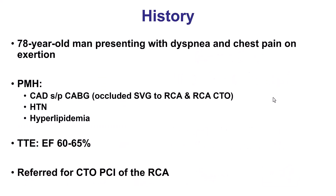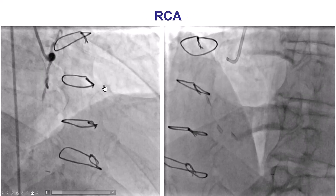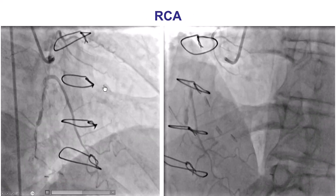The patient was an elderly gentleman with dyspnea and angina on exertion. He had previous coronary bypass, but the bypass graft to the right coronary artery was occluded and the native RCA was a CTO. He was sent for re-canalizing the CTO of the right coronary artery, which was considered to be the culprit vessel.